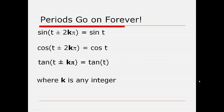The sine of t plus or minus any multiple of 2 pi is going to be the sine of t. Any multiple means we put a value k that represents any integer — it could be t plus or minus 2 pi if k is 1, or t plus or minus 4 pi if k is 2, and so on. The same is true for cosine — its period is 2 pi, so the cosine of t plus or minus 2k pi is equal to cosine of t. For the tangent, the period is pi, so the tangent of t plus or minus k times pi is equal to the tangent of t. This allows us to express in a very concise way that these sine, cosine, and tangent functions go on forever.